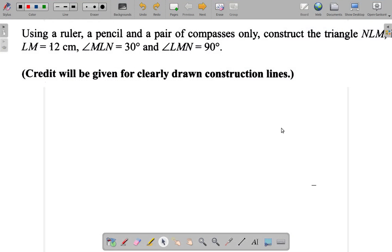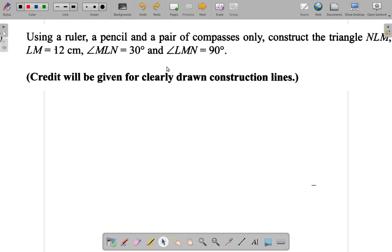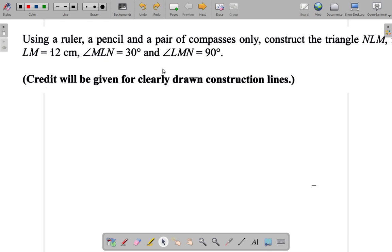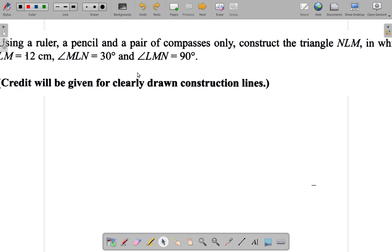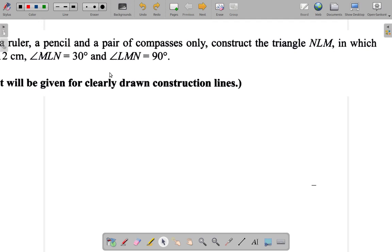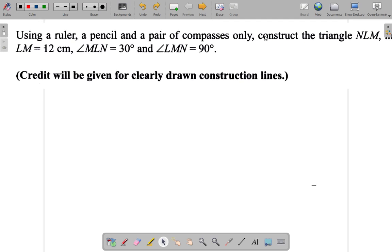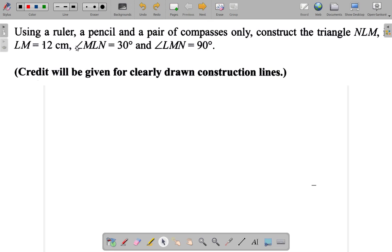Question 3A of the CSEC May 2019 paper. It says using a ruler, a pencil and a pair of compasses only, construct the triangle NLM in which LM is 12 cm, angle MLN is 30 degrees and angle LMN is 90 degrees.